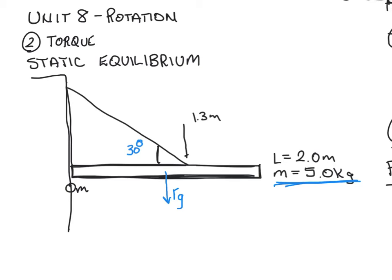The force of gravity caused by the beam produces a torque — it rotates clockwise, so that's negative 50 times one meter. That's the torque produced by the beam. The only other torque is produced by the string or rope. The force of tension on the string is exerted at an angle, so we need to use trig. We have to find the x and y components of the force of tension.